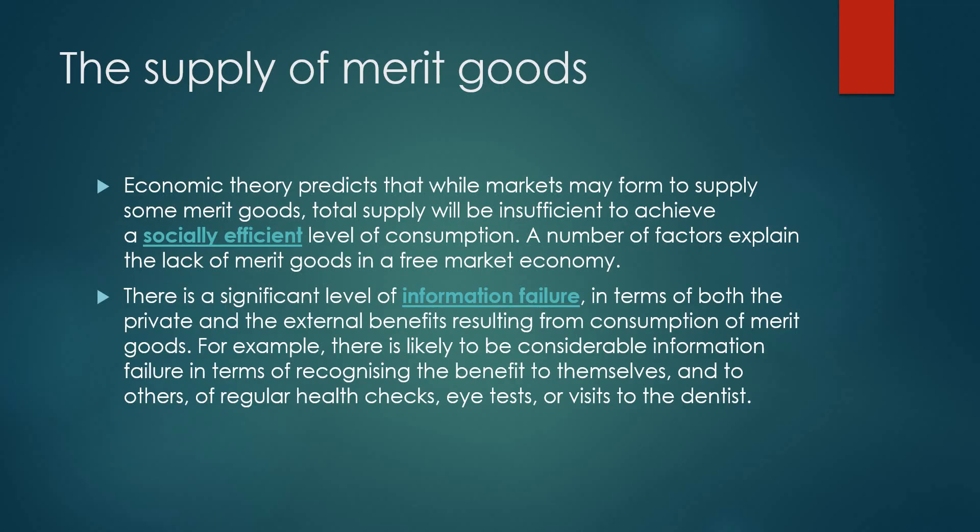To summarize, education and healthcare give positive externalities and are examples of merit goods. Club goods are excludable but non-rivalry. Public goods are a broader category. This covers the key differences and characteristics of merit goods.